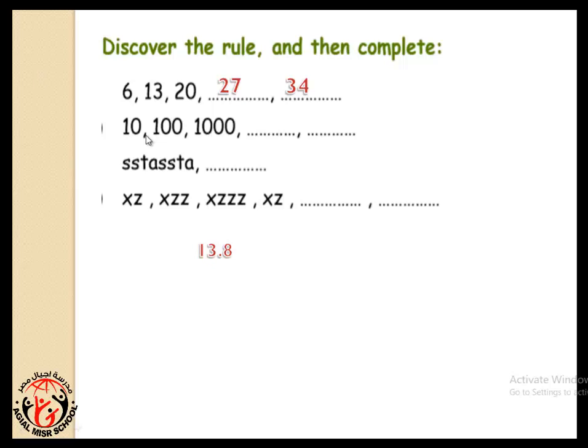10, 100, 1000. It's here 1, 0. And here 2, 0. And here 3, 0. Then the next number has 4, 0. It will be 10,000. Very good. And the next one has 5, 0. It will be 100,000. Excellent.